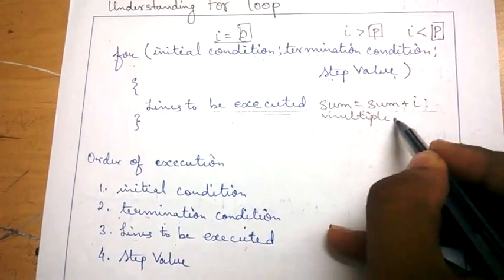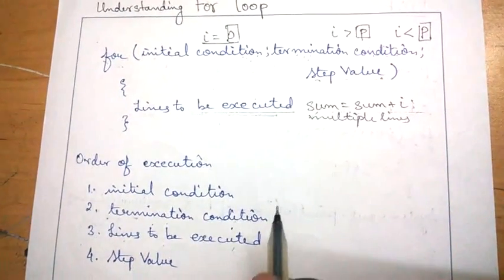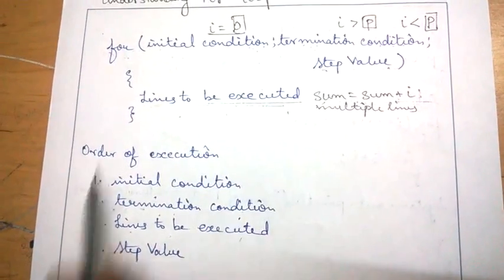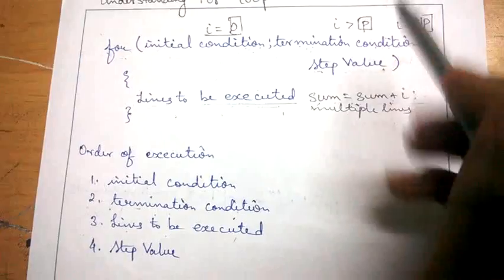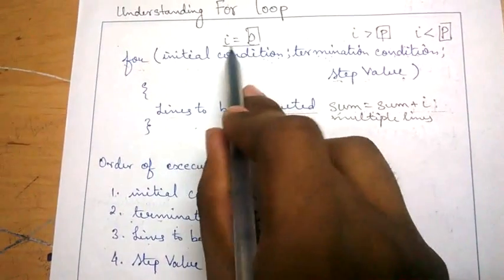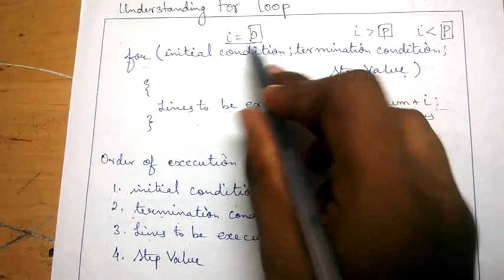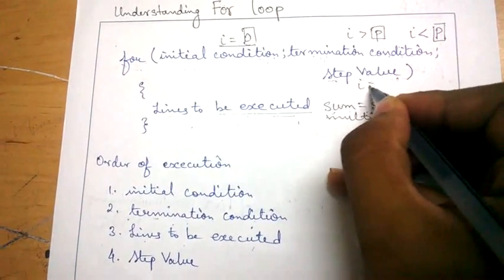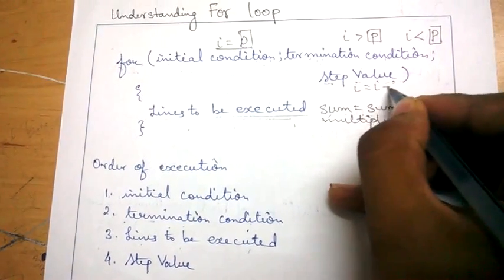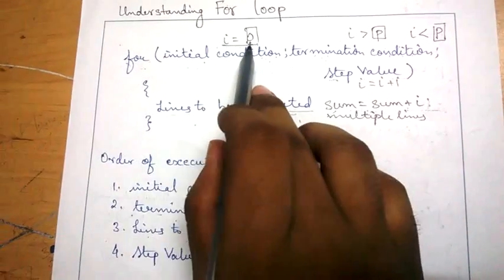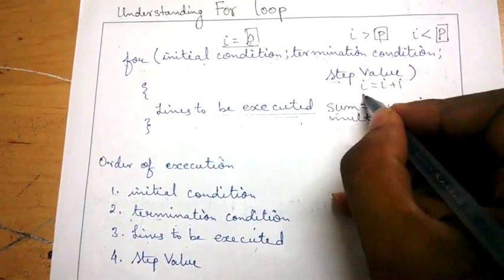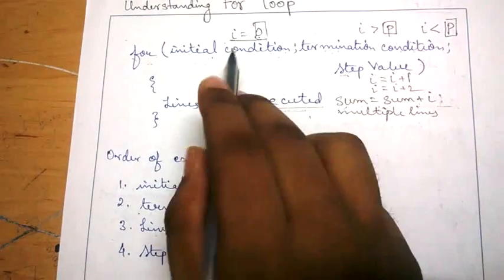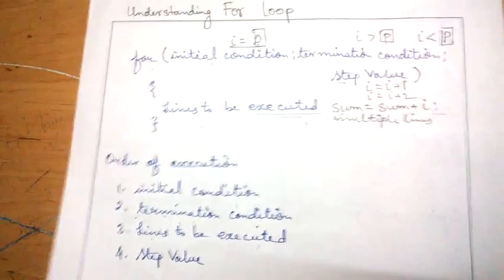Multiple lines can come here. At last, after executing the lines to be executed, the program goes to the step value — the step with which you are going to increase the value of the current condition. For example, if i is equal to zero, you can change it to i equal to i plus one, which increases i by one. Or you can write i equal to i plus two, which increases i by two.